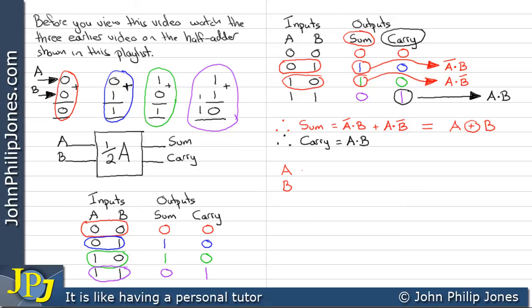Now I can produce the combinational logic circuit for this. Because I can now realize that I can produce the sum using an exclusive OR gate which is shown here. So there we can see we have the sum part.